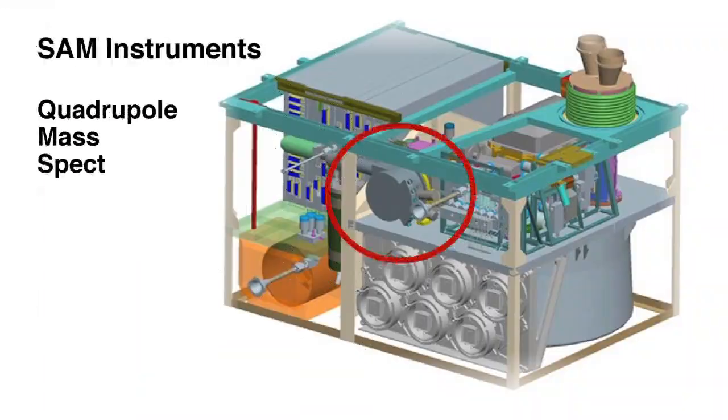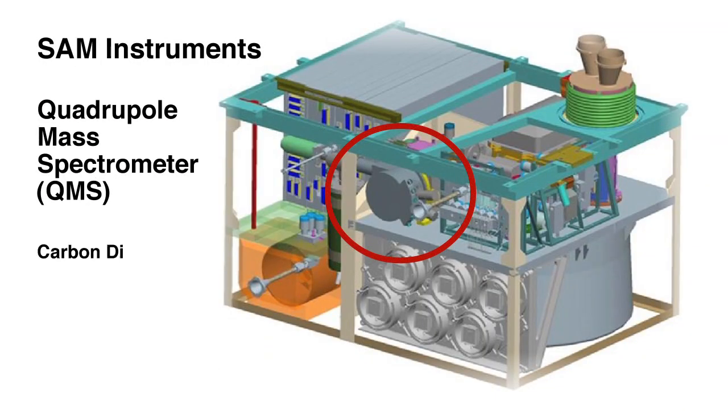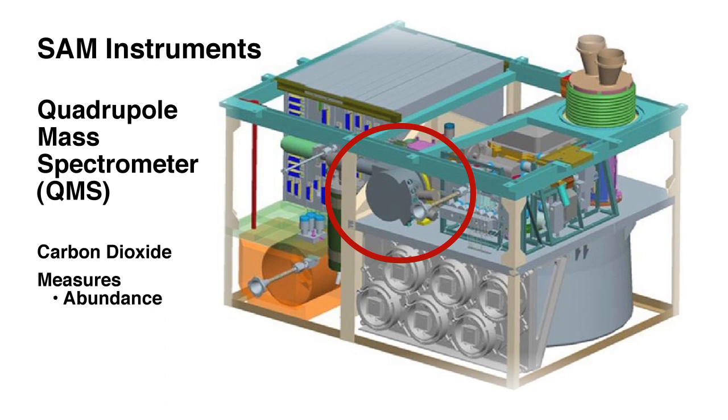With our QMS, SAM is able to detect the most dominant gas in the Martian atmosphere, carbon dioxide. We've not only measured its abundance and the ratio to other gases in the Martian atmosphere, but we've also measured its isotopic character.